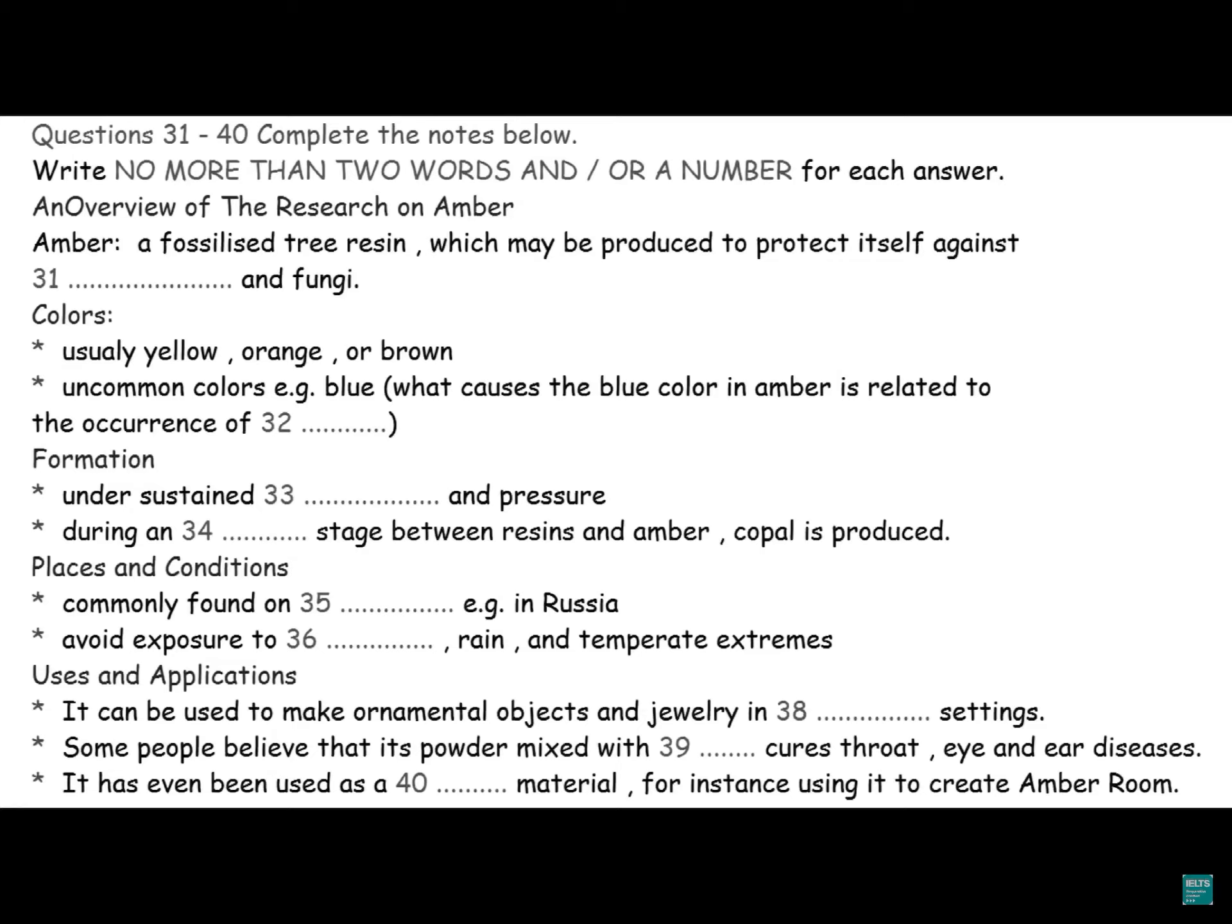Amber occurs in a range of different colours. Besides the usual yellow, orange and brown, other uncommon colours are also associated with it. Interestingly, blue amber, the rarest Dominican amber, is highly sought after. It's only found in Santiago, Dominican Republic. There are several theories about what causes the blue colour in amber. The most common one links it to the occurrence of volcanic dust that was present when the resin was first pressed out from Himnaya Proterra millions of years ago.